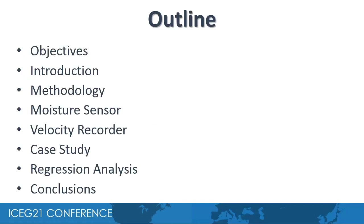This is the outline of this presentation. First we discuss the objectives of the study. Then a little introduction about the scope of geophysical methods and their various applications. We take a look at the methodology and equipment used in the velocity and moisture survey, followed by details about the moisture sensor and velocity recorder. Then we have our case study and regression analysis, and finally our conclusions.